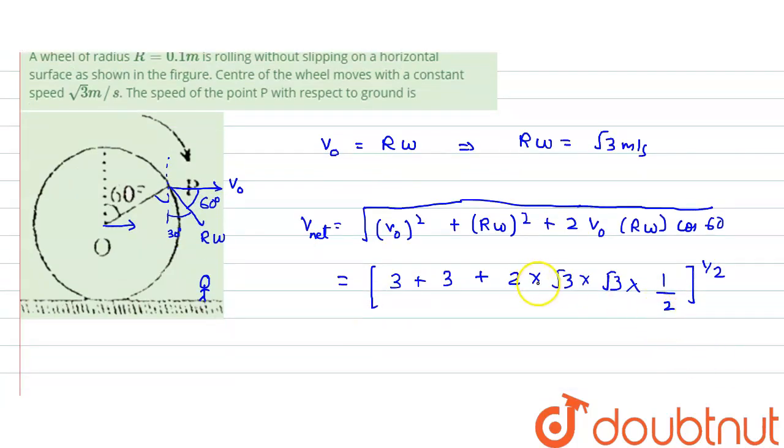This 2 and this 2 would be gone, so it would be 3 plus 3, 6, root 3 into root 3 would be 3, so 3 plus 3, 6 plus 3, 9. That means square root of 9 equals 3 meter per second. So this would be moving with a speed of 3 meter per second.